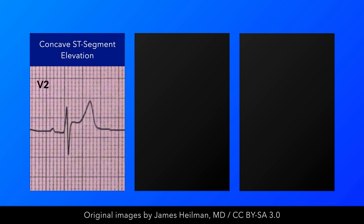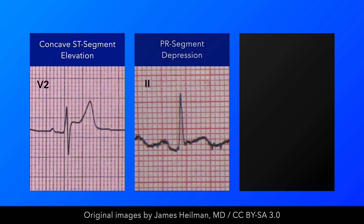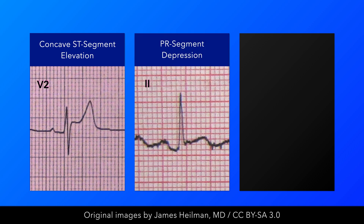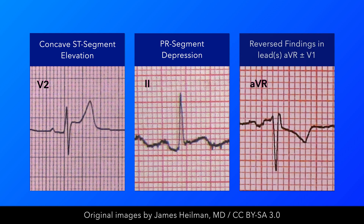Now let's quickly recap. Classic findings we can expect to see in a case of acute pericarditis include widespread ST segment elevation with an upward concavity, widespread PR depression, and the inverse or absence of these findings in leads AVR and V1.